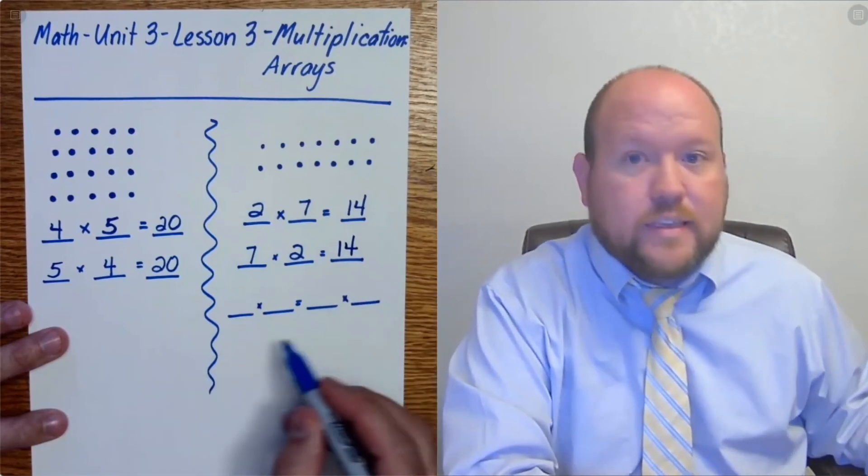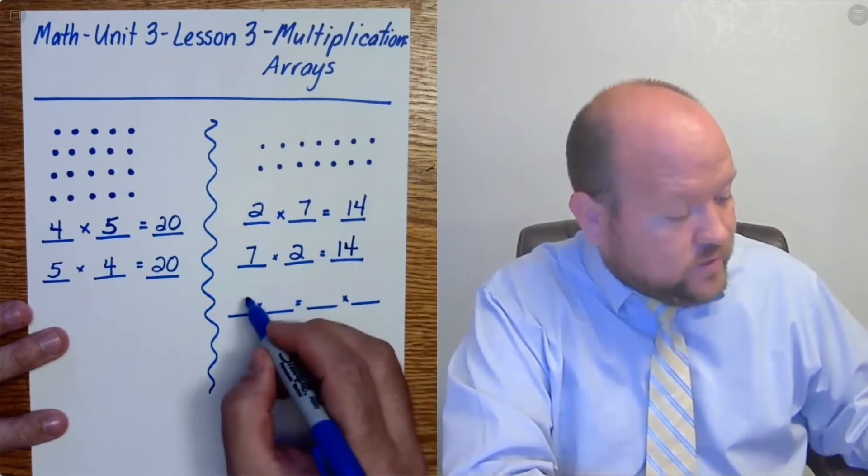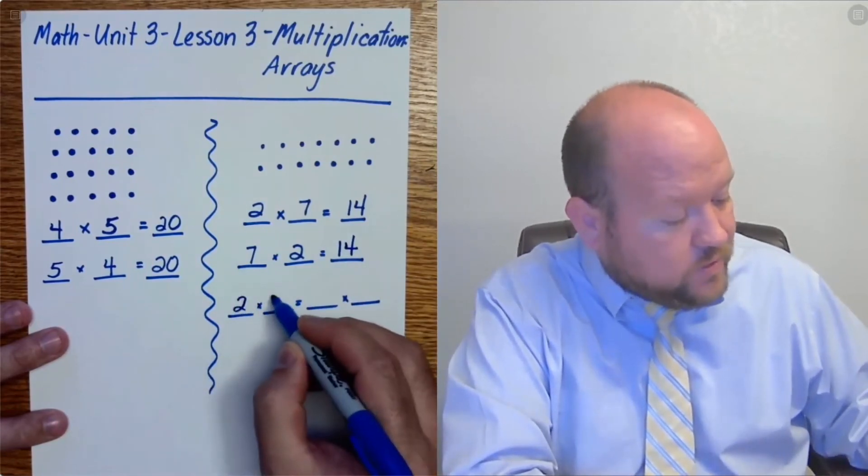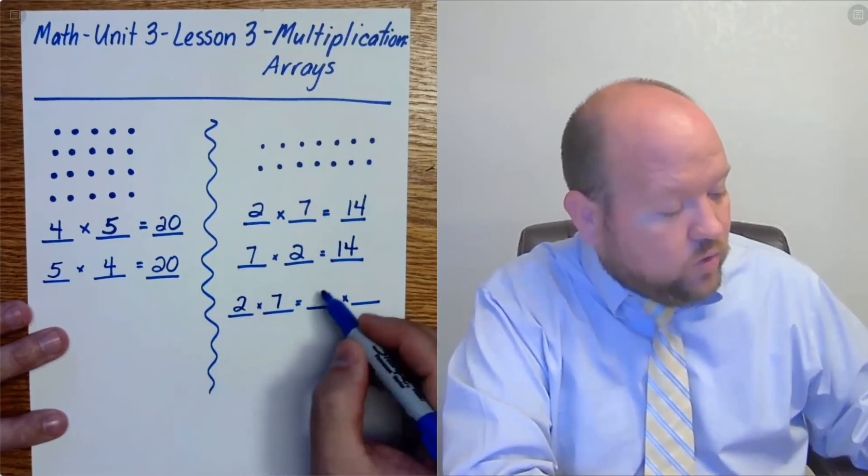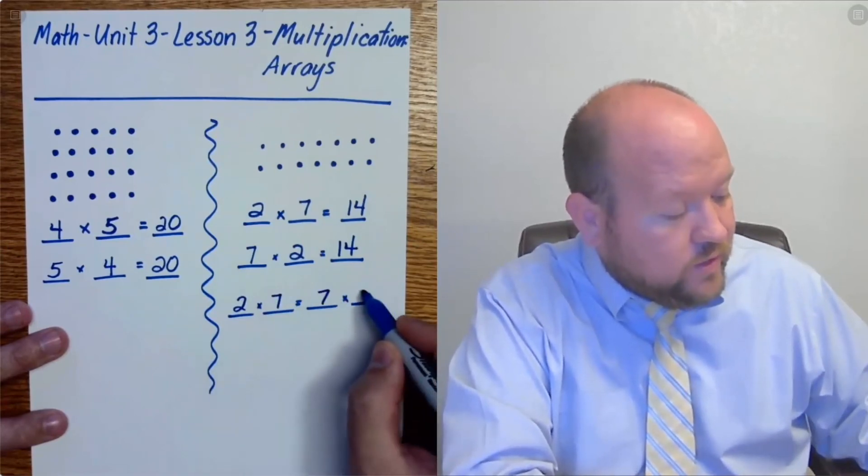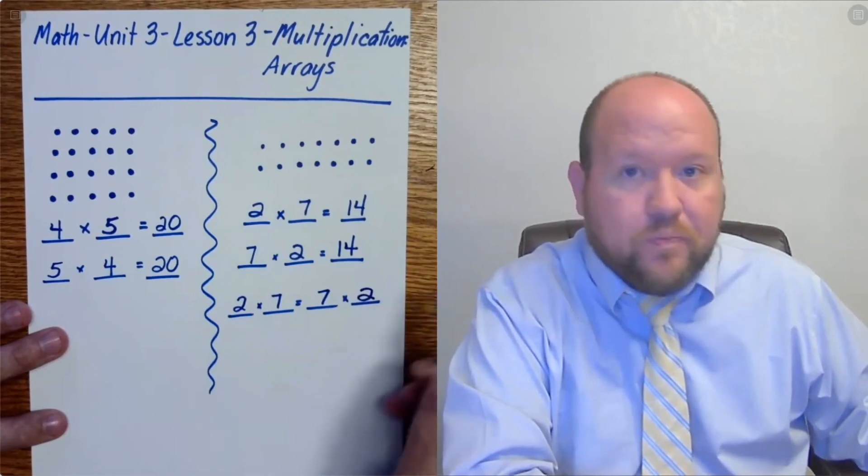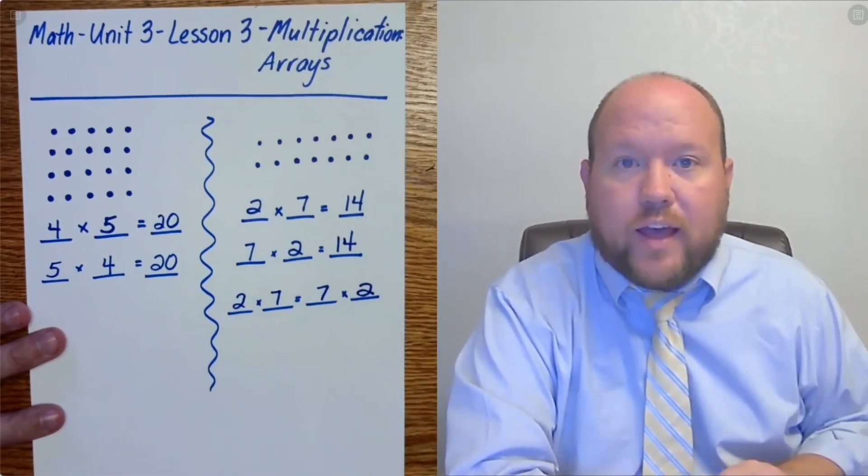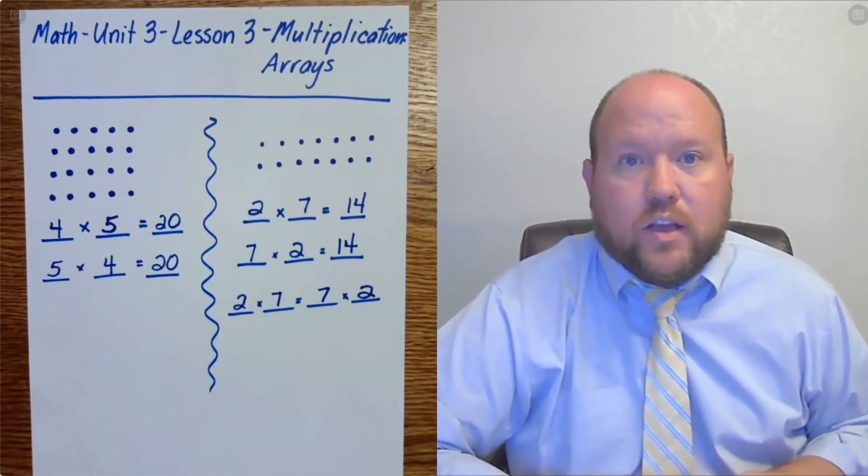Now what this lets us know then is that two times seven is equal to seven times two. It doesn't matter which way we solve that. It works out either way.